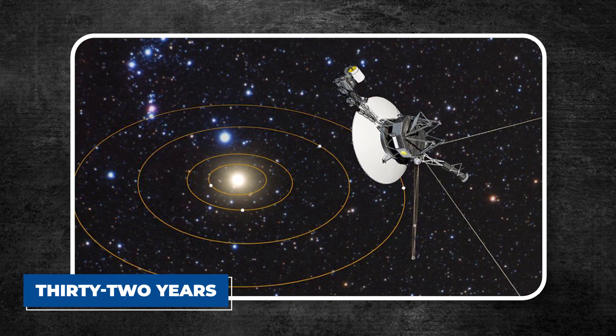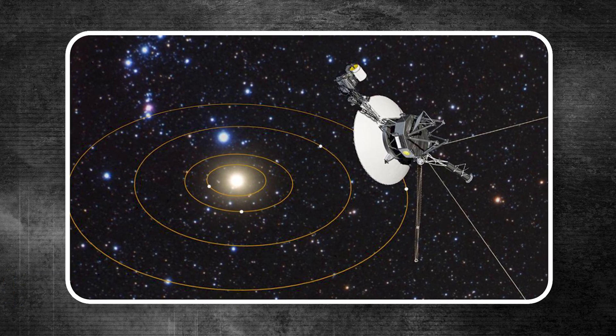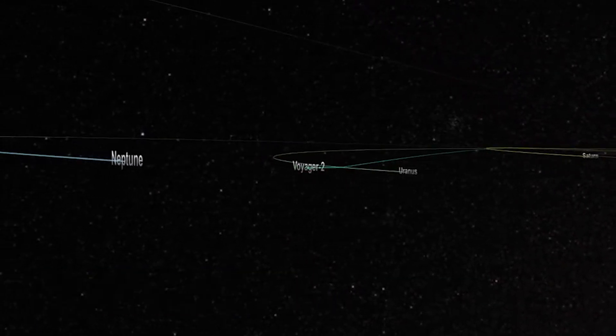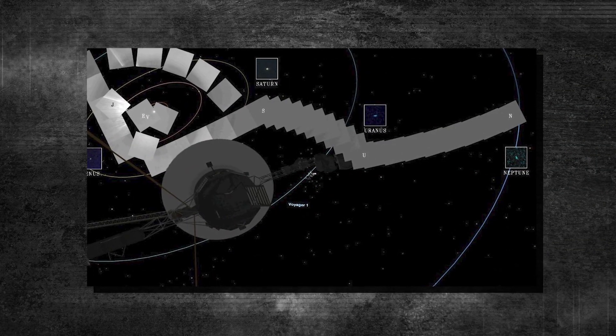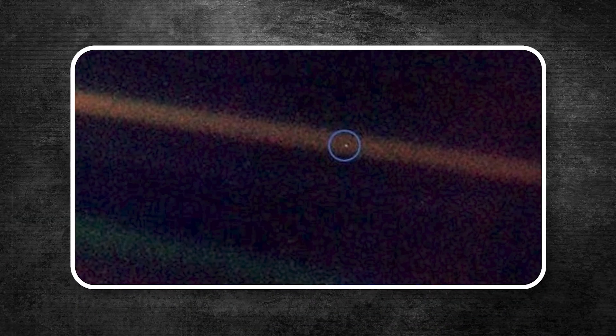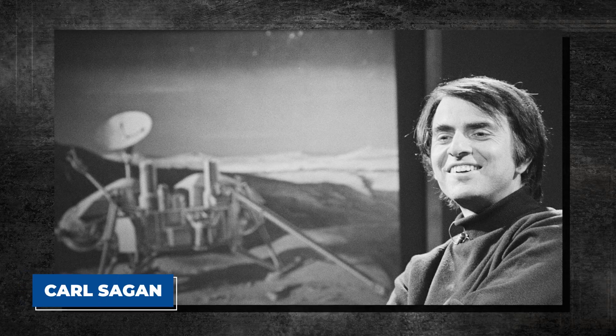It took 32 years to reach the farthest point influenced by the Sun. In 1990, while drifting beyond Neptune, it captured one of the most famous images in history. Earth, seen from 6 billion kilometers away, appeared as a tiny pale blue dot. This image, described by Carl Sagan, reminded us how small and fragile our planet is in the vastness of space.